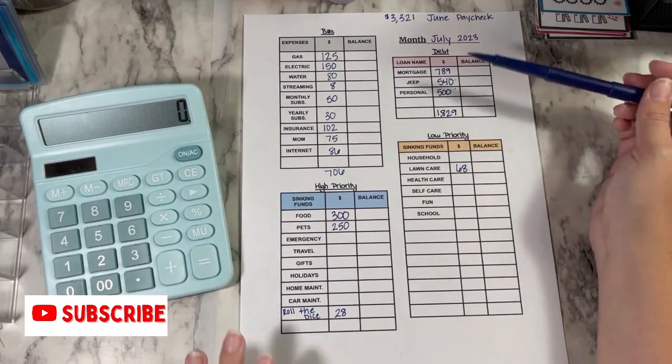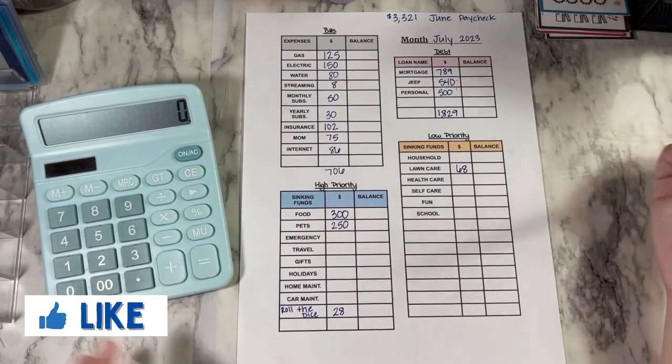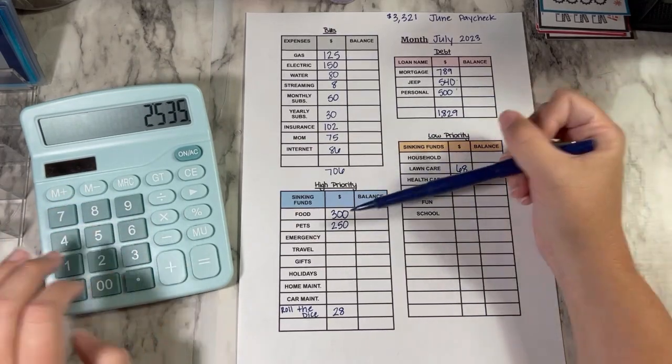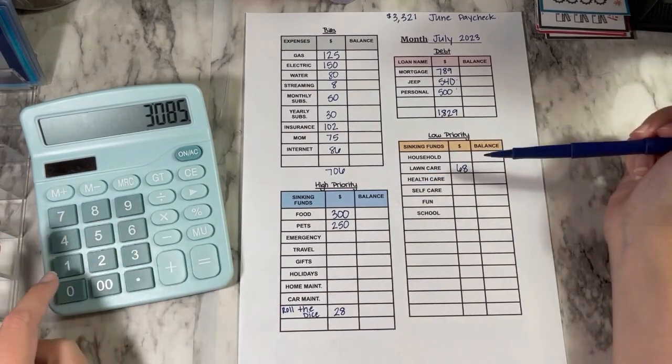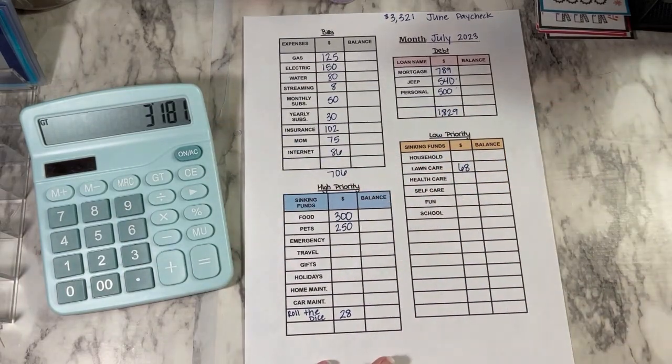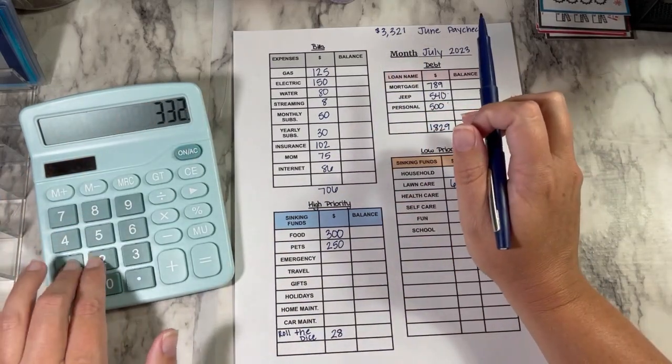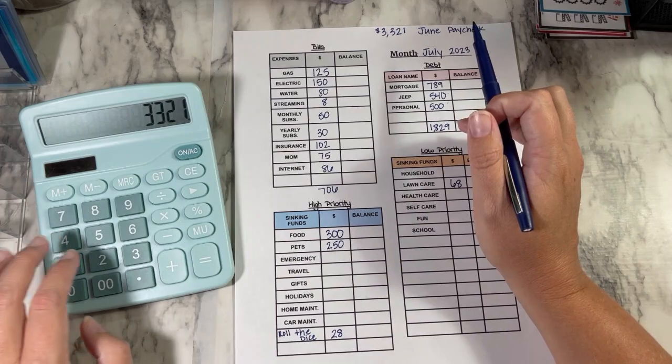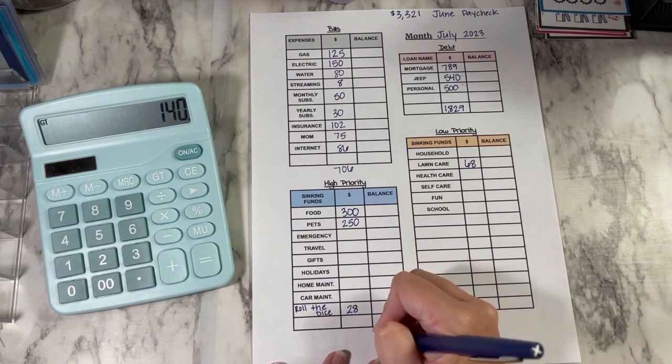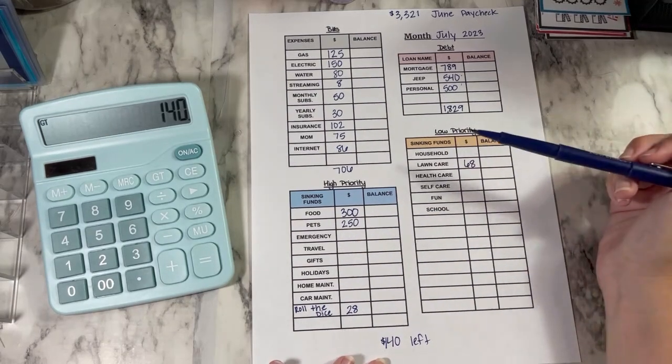What I do next is I add up my debt, my bills, and what I already have written in to see how much I have left over. $1,829 plus $706 plus $550 plus $28 plus $68. So that's $3,181. And then I just subtract that from how much my paycheck is. So $3,321 minus $3,181. So that is $140 left to go into my other funds here.